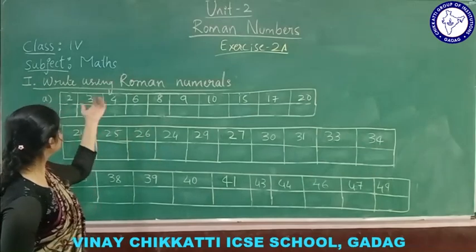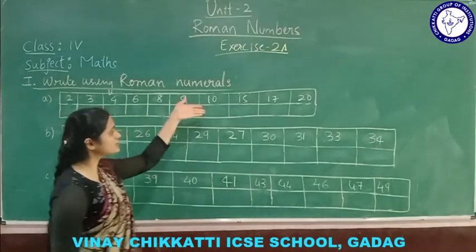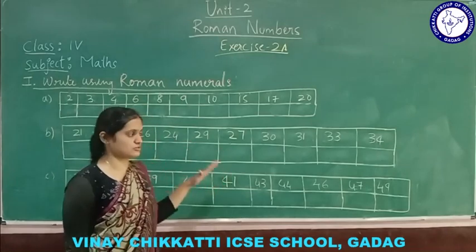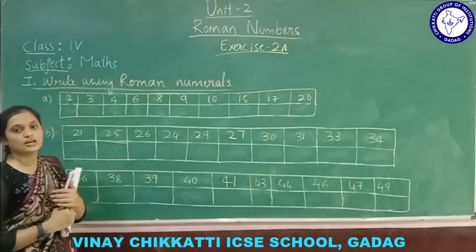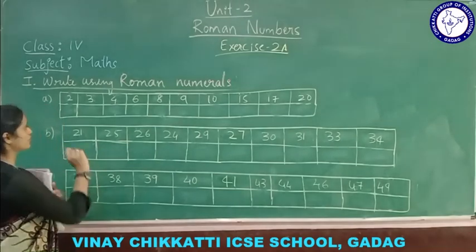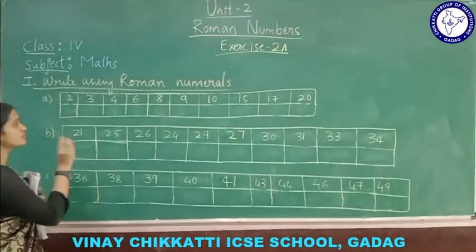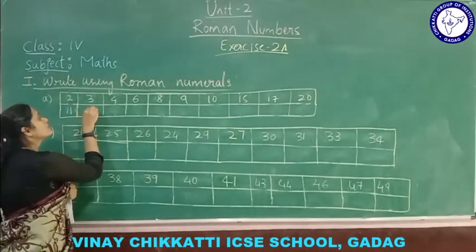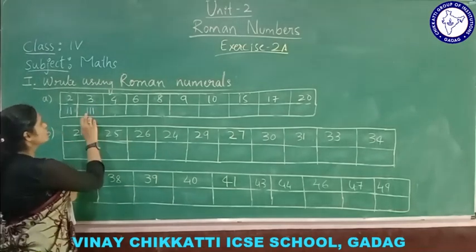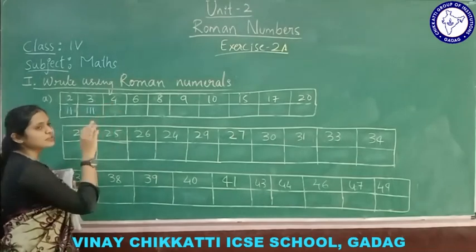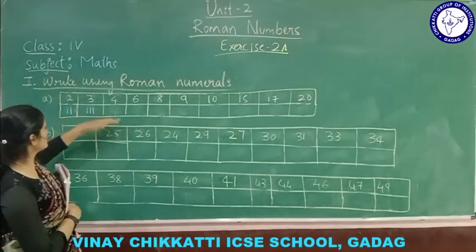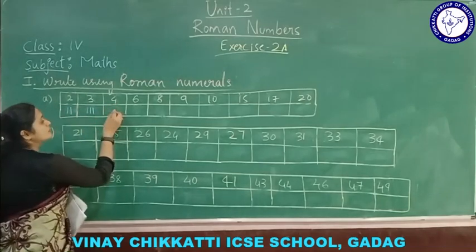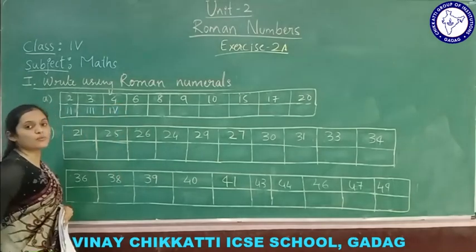Next exercise: they have given Hindu-Arabic numbers and you have to write the Roman numerals. 2 is written as I I. 3 is I I I — repeat the number. 4 is usually written as V minus 1, that is I V. 6 is V I — 5 plus 1. 8 is V I I I — 5 plus 3. 9 is written as X minus 1, that is I X.